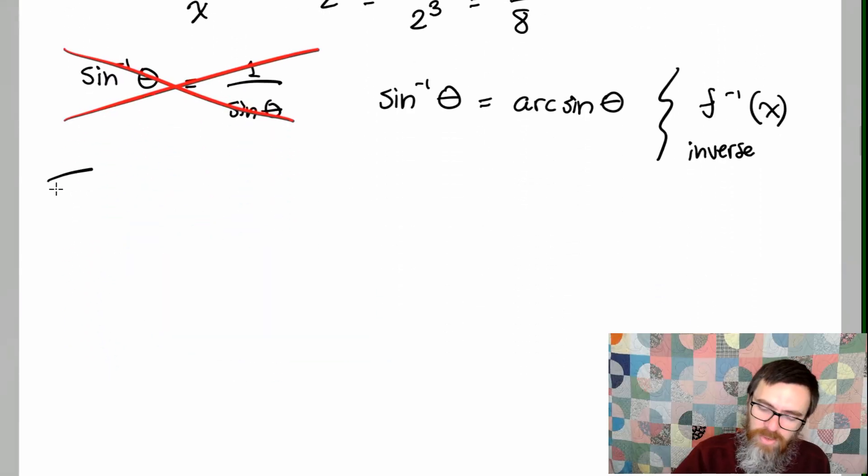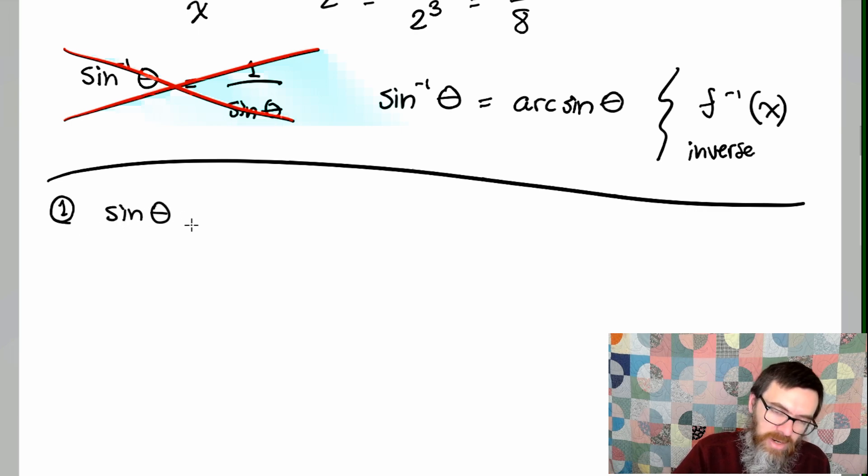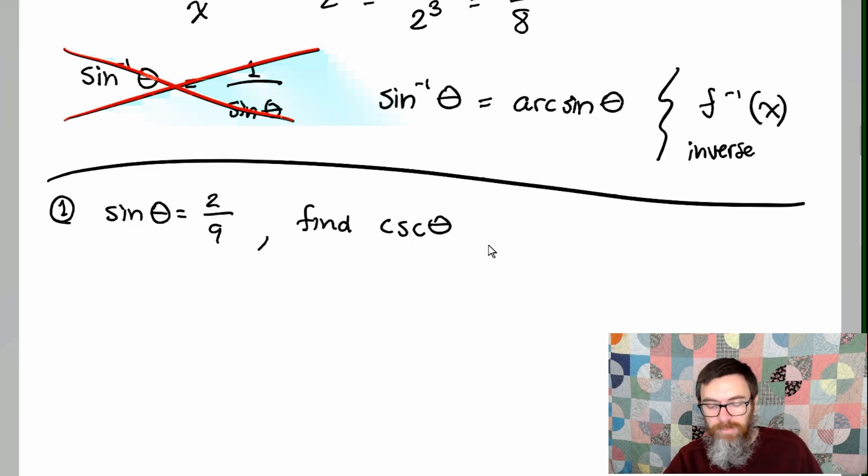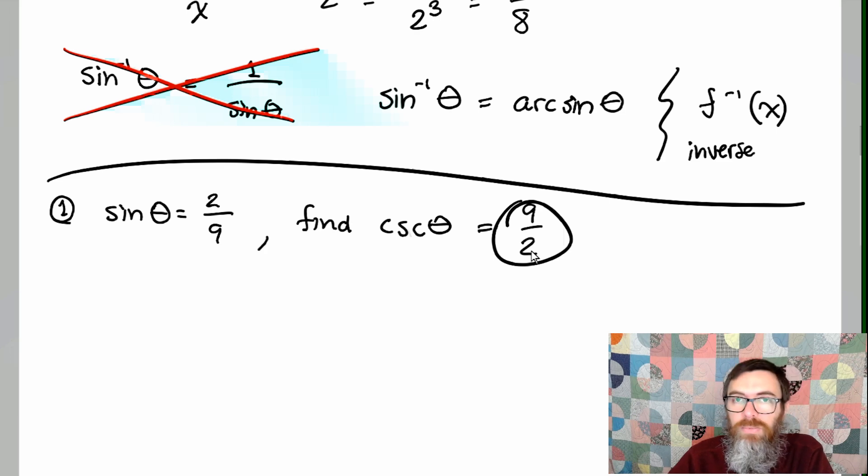So keeping this in mind, and again going with what we saw in the last few videos, if I say that sine of theta is equal to 2 over 9, find cosecant of theta. Well since these guys are reciprocals of each other, that means that this is just going to be 9 over 2. That's it, just turn it upside down.